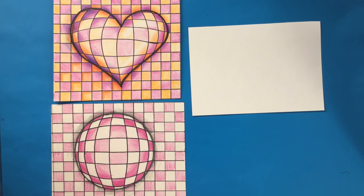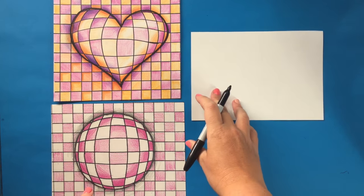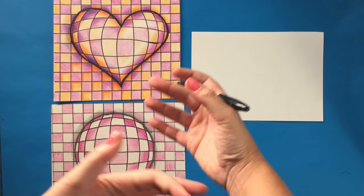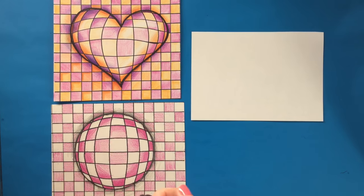This dives into our element of art called space—not like outer space, but how things can look further or closer to us depending on how we draw them. And this is called an optical illusion.